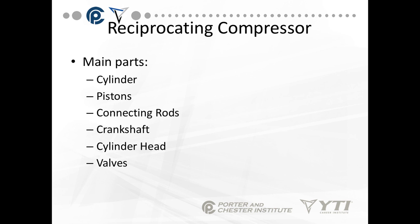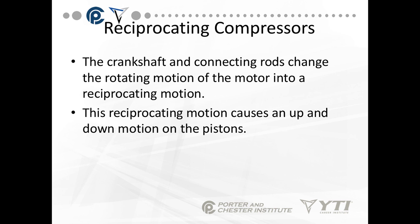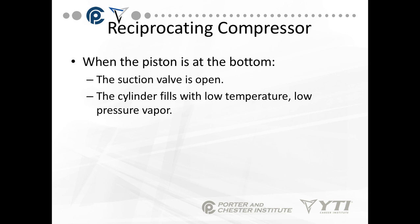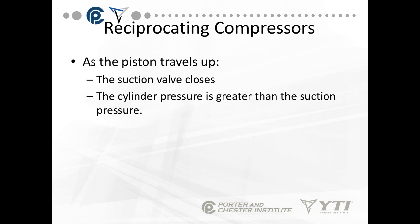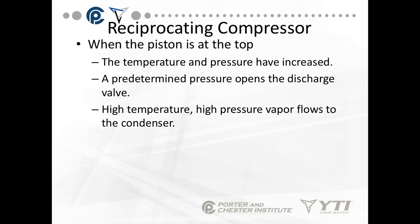The main parts of the reciprocating compressor are: a cylinder, a piston, connecting rods, a crankshaft, a cylinder head, and valves. The crankshaft and connecting rod change the rotating motion of the motor into a reciprocating motion. When the piston is at the bottom of the stroke, the suction valve is open and the cylinder fills with low-temperature, low-pressure vapor. As the piston travels up, the suction valve closes and cylinder pressure becomes greater than suction pressure. When the piston is at the top, temperature and pressure have increased — whenever we compress gas we increase the temperature. A predetermined pressure opens the discharge valve.